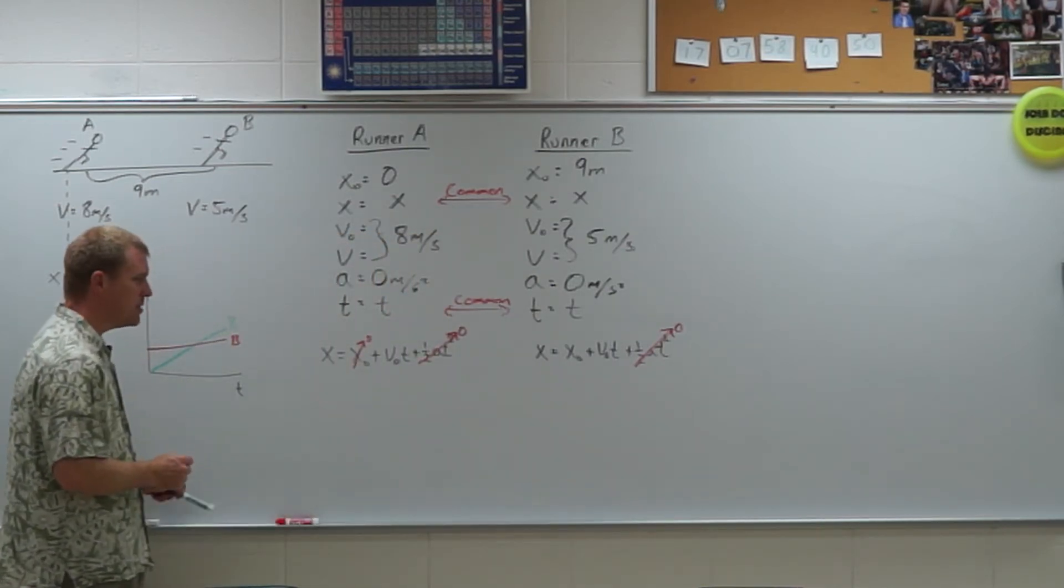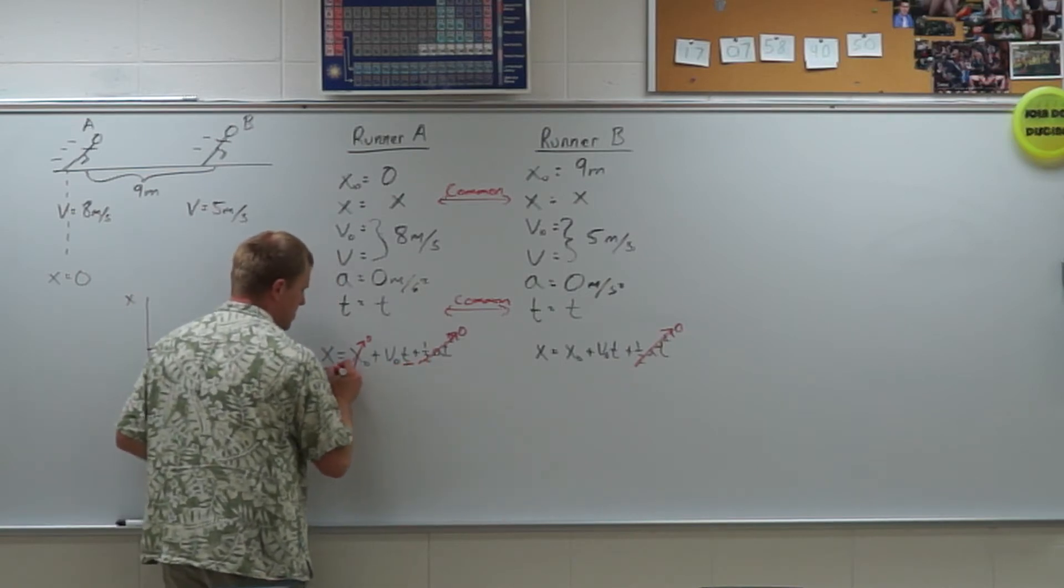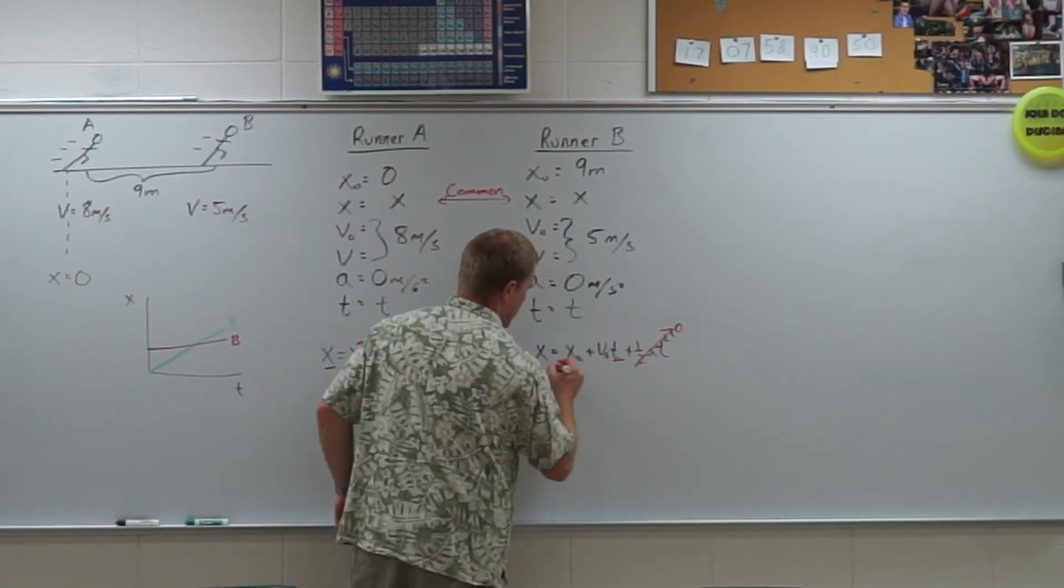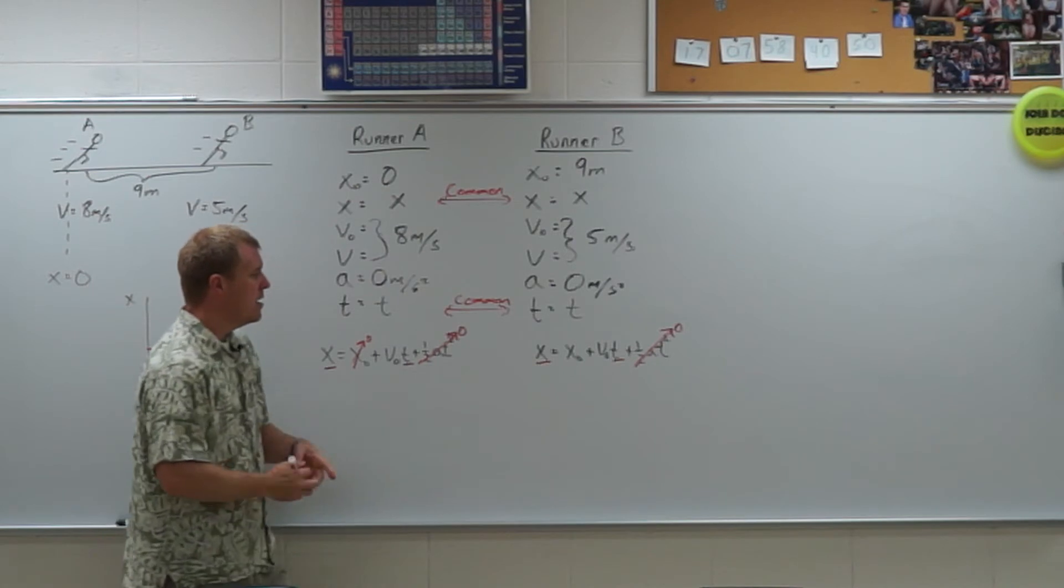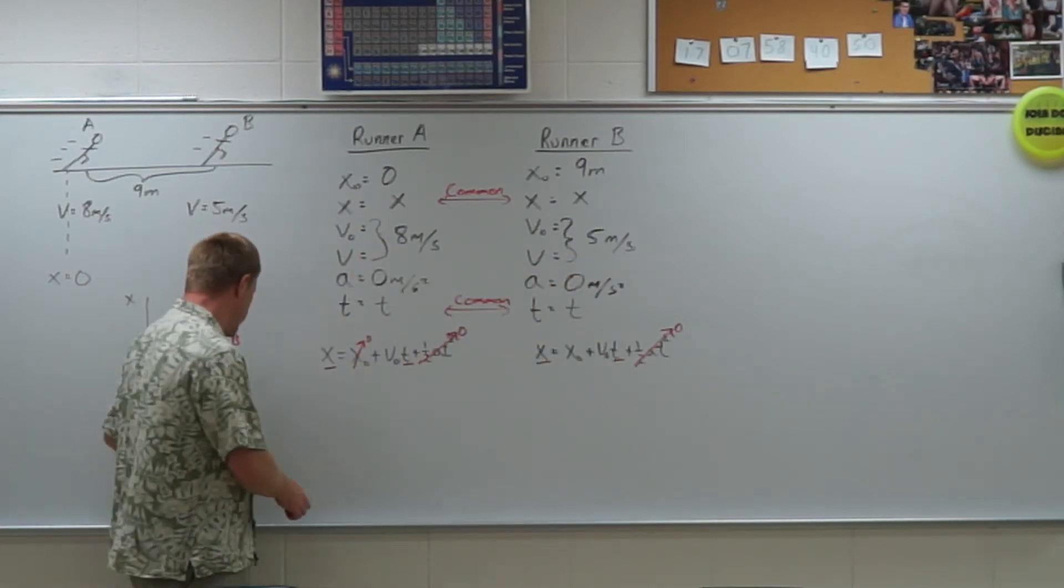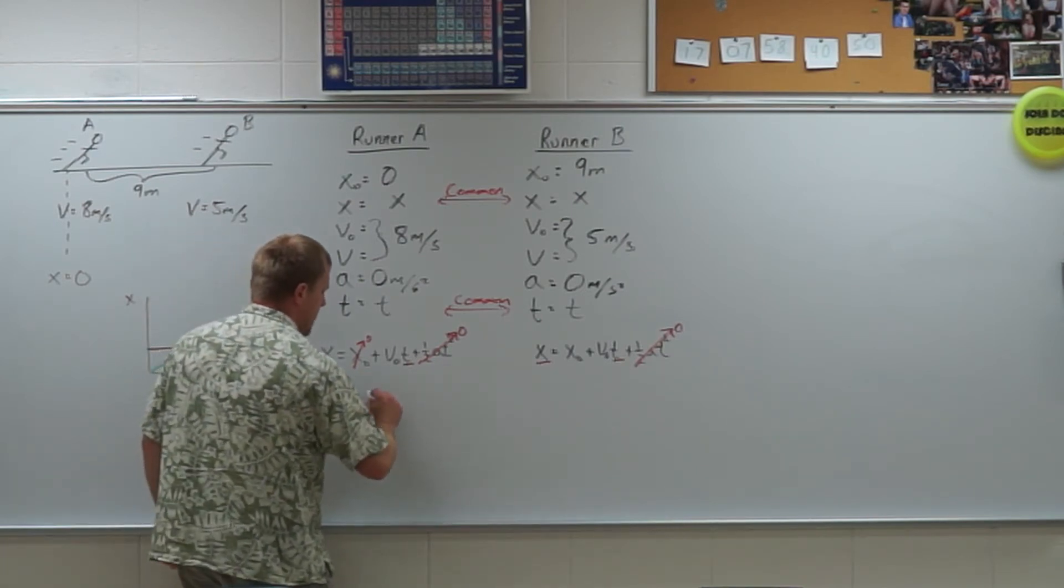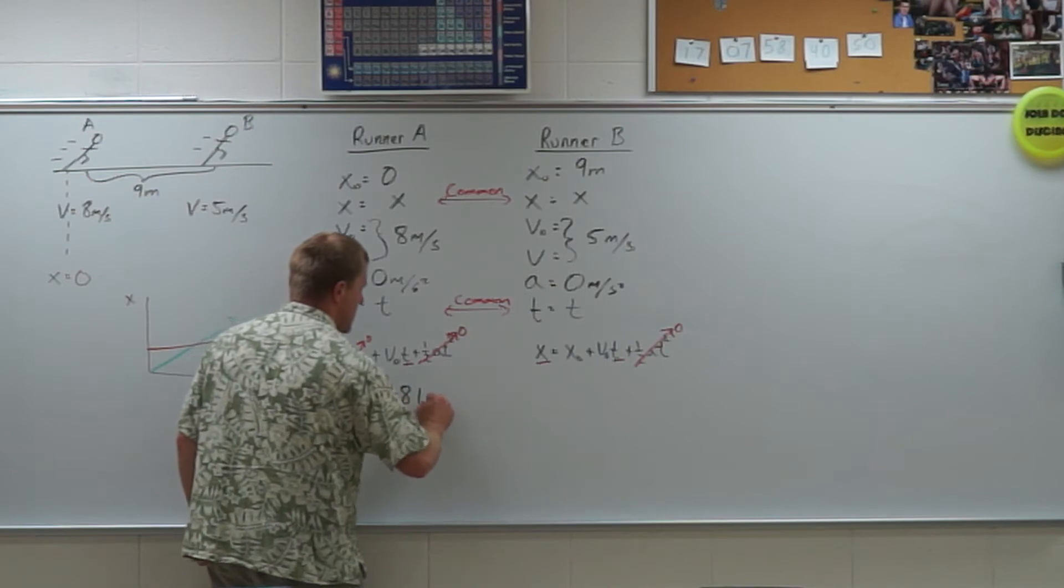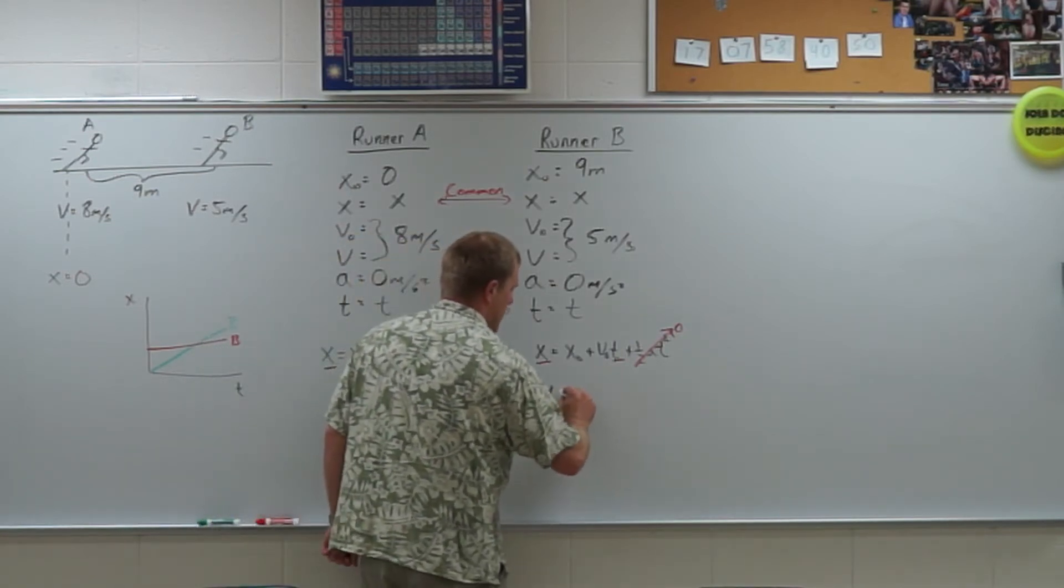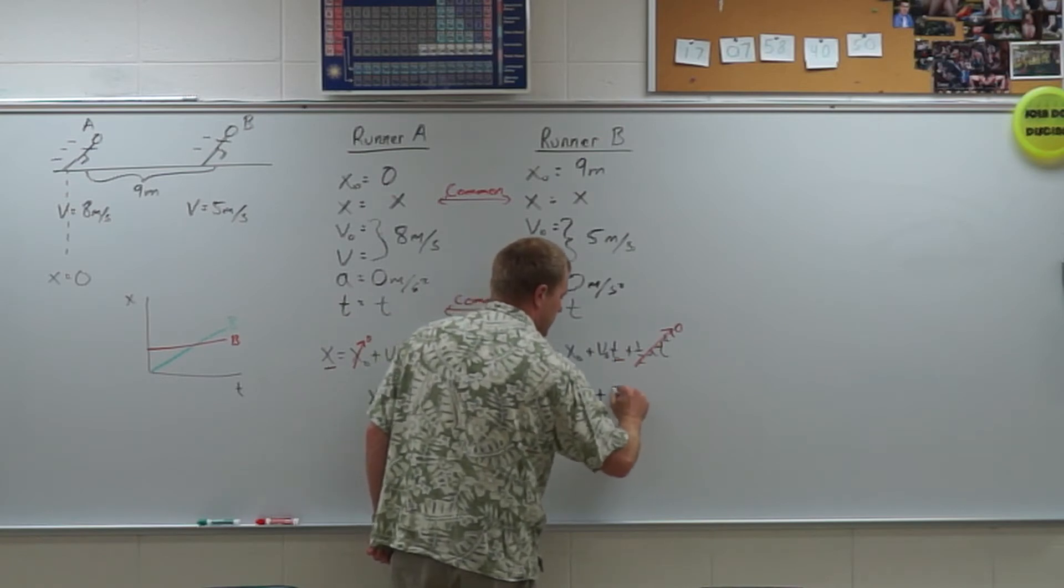So first thing we're going to do is we're going to cross off anything that's zero. So runner A starts at a position of zero and has no acceleration. Runner B has no acceleration. So what's common between these two? What's common is time and position, time and position. This v₀ is referring to this 5. This v₀ is referring to this 8. So let's write that in just so we don't get confused. So this equation becomes x is equal to 8t. This equation becomes x is equal to the initial position, 9 plus 5t.